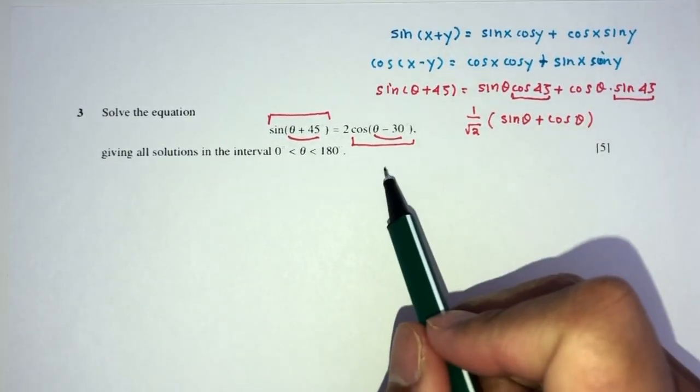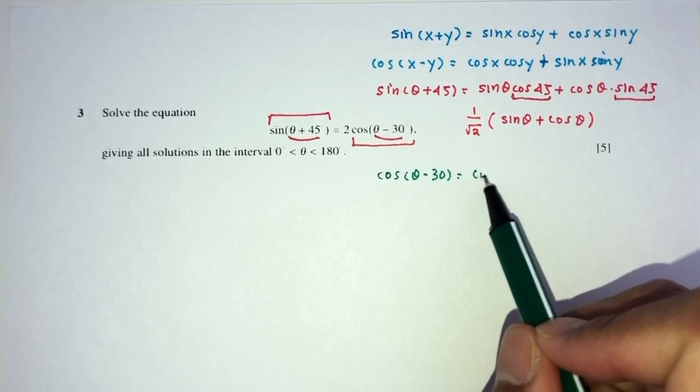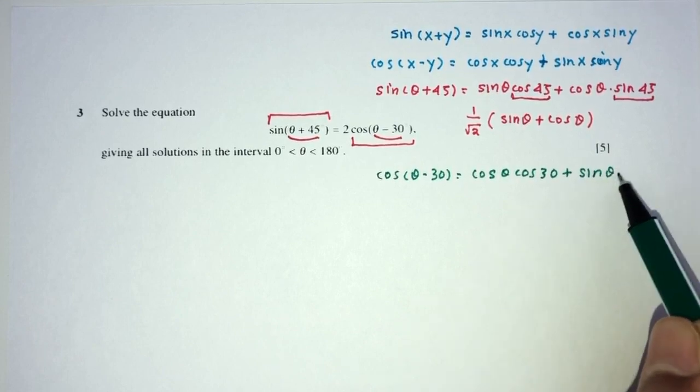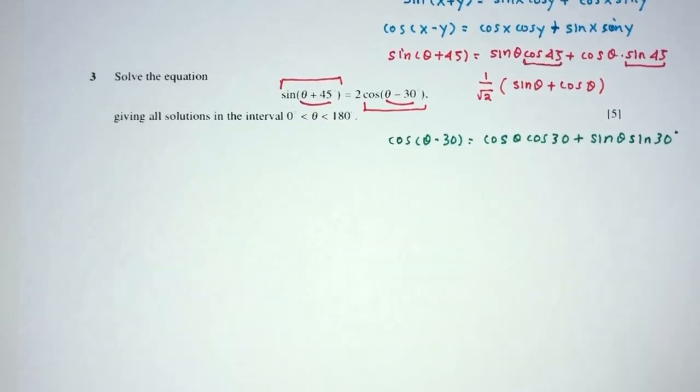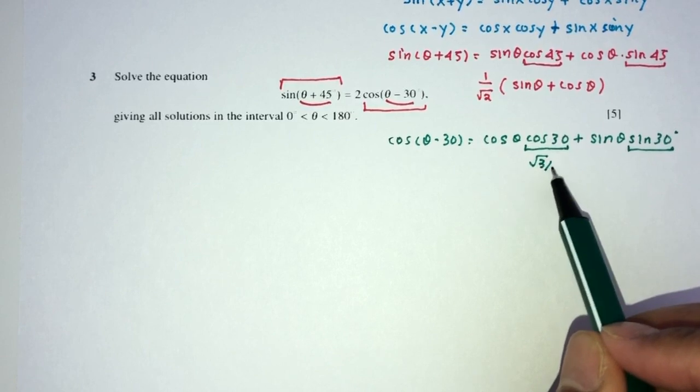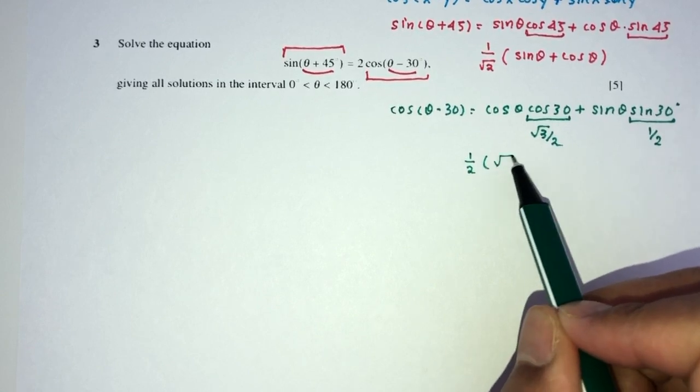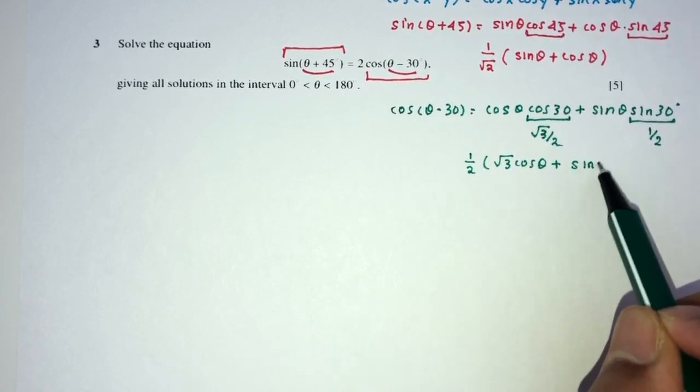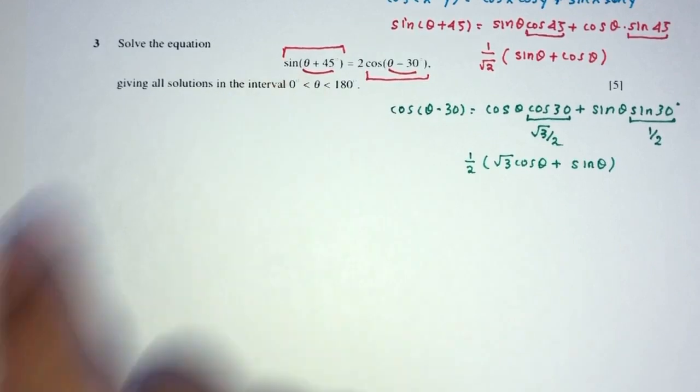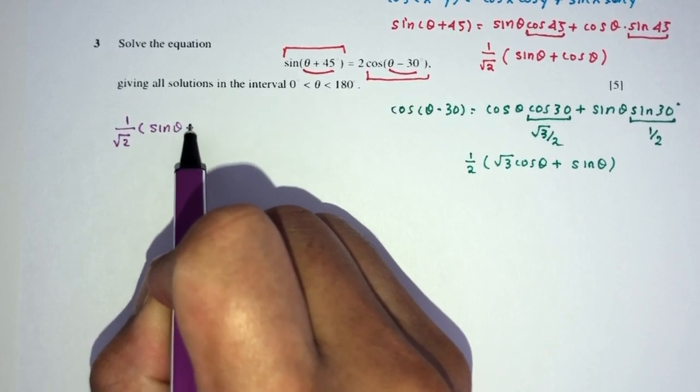How about this one? Similarly, we can expand this. You have cos(θ-30). Using the formula here will be cos(θ)cos(30) + sin(θ)sin(30). Now, what can we do? So this will be exact value as well. We should note this √3 over 2, this is just half. We can factorize half outside. So you will have √3 cos(θ) + sin(θ). Now, once you have this, put them back into your main equation.